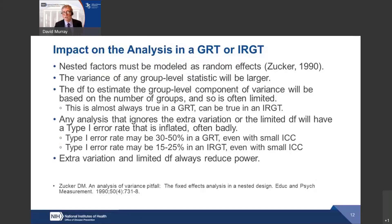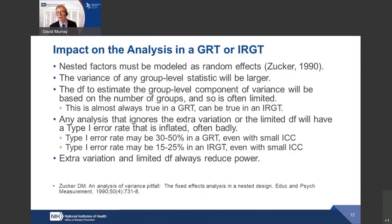Nested factors must be modeled as random effects, going back to a paper by David Zucker published in 1990. The variance of any group-level statistic is going to be larger and the degrees of freedom available are going to be limited. This is almost always true in a group randomized trial and often true in an individually randomized group treatment trial. If you ignore those issues — the extra variation or the limited degrees of freedom — you're going to have an inflated type one error rate. The type one error rate might be 50 percent, not 5 percent. In an individually randomized group treatment trial, it might be 25 percent instead of 5 percent. You need to deal with these issues up front as you're planning the study.